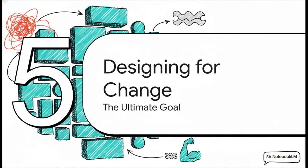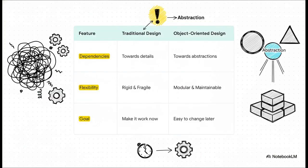When you take a step back and look at the big picture, you start to see that all of these principles, dependency inversion, single responsibility, they're all working toward one single powerful goal. It's all about designing for change. It's about building systems that can actually evolve over time without collapsing under their own weight. And the difference in philosophy really couldn't be more clear.